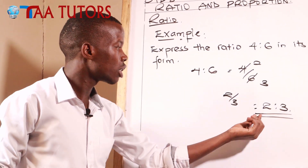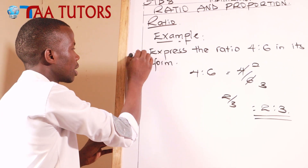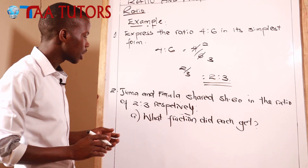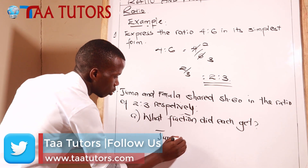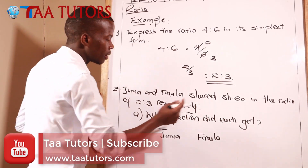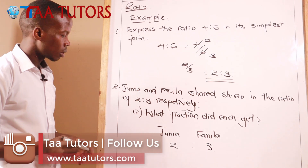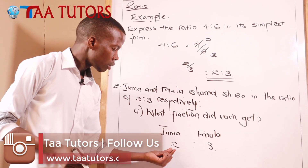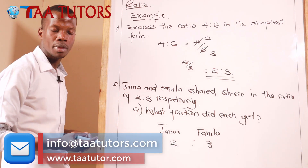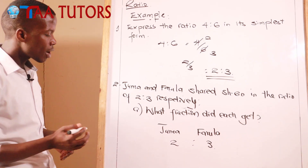We have expressed 4 to 6 in its simplest form, which is 2 to 3. Now let's look at another example still under ratio. Juma and Farola shared 60 shillings in the ratio of 2 to 3 respectively - meaning Juma has a ratio of 2 and Farola has a ratio of 3. The first step is to find the fraction which each person got.